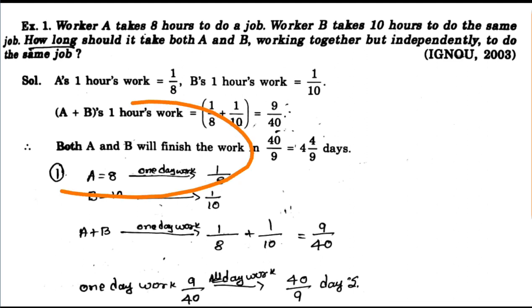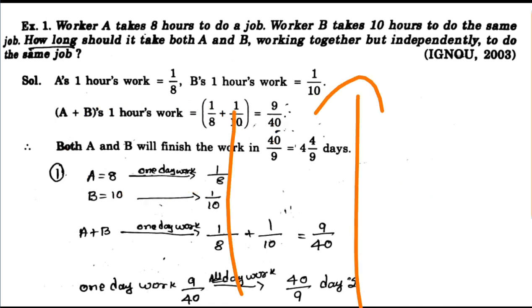First, you need to work out A's 1 hour work, and B's 1 hour work. Your combined time will give you the work. At this point, we will see the job of working together.